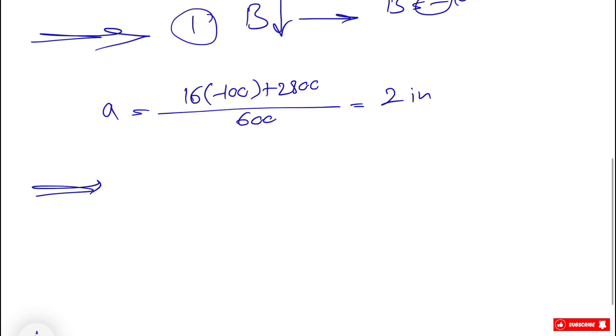And we have the second condition where B is upward and it will be 200. So this time we'll have 16 times 200 plus 2800 divided by 600. And this would give us 10 inches.